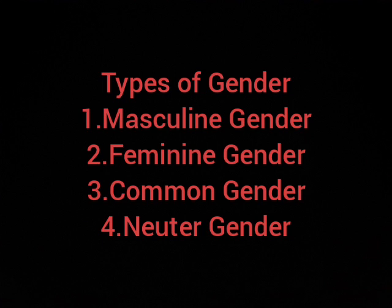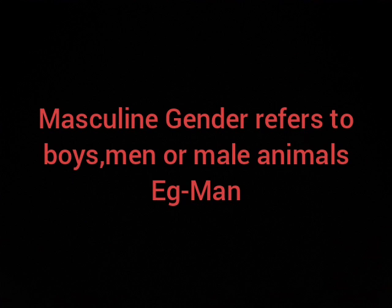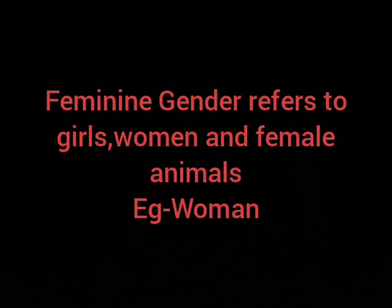Masculine gender refers to boys, men, or male animals. Feminine gender refers to girls, women, and female animals. So masculine gender is for boys and men and male animals, whereas feminine gender is for girls, women, and female animals.